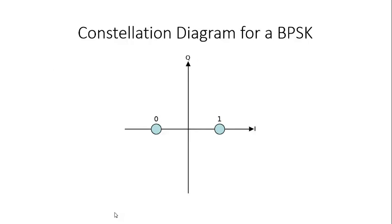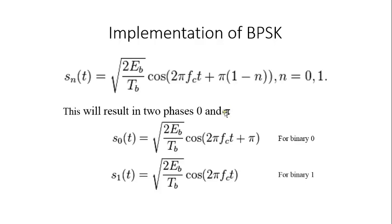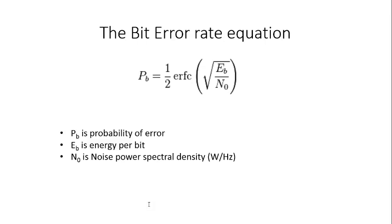This figure represents the constellation diagram for BPSK. The equations shown here are used for the implementation of BPSK. The first equation results in two phases, zero and pi. The next two equations are for binary zero and binary one respectively. The bit error rate equation is also shown here, where Pb is the probability of error, Eb is the energy per bit, and N0 is the noise power spectral density.